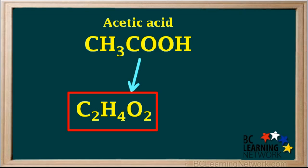So the simplified formula for acetic acid, CH3COOH, is C2H4O2. We'll use this formula from now on in the video.